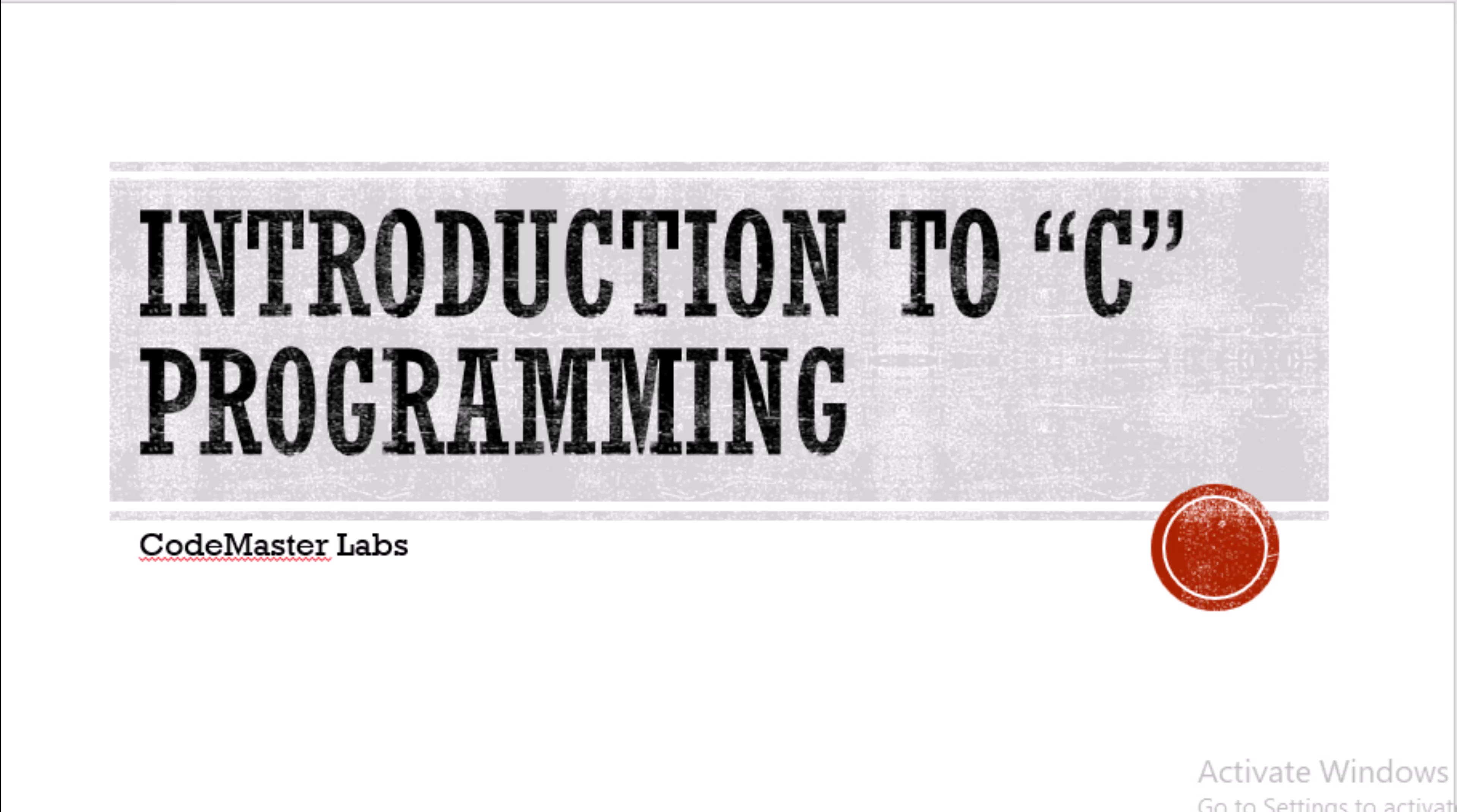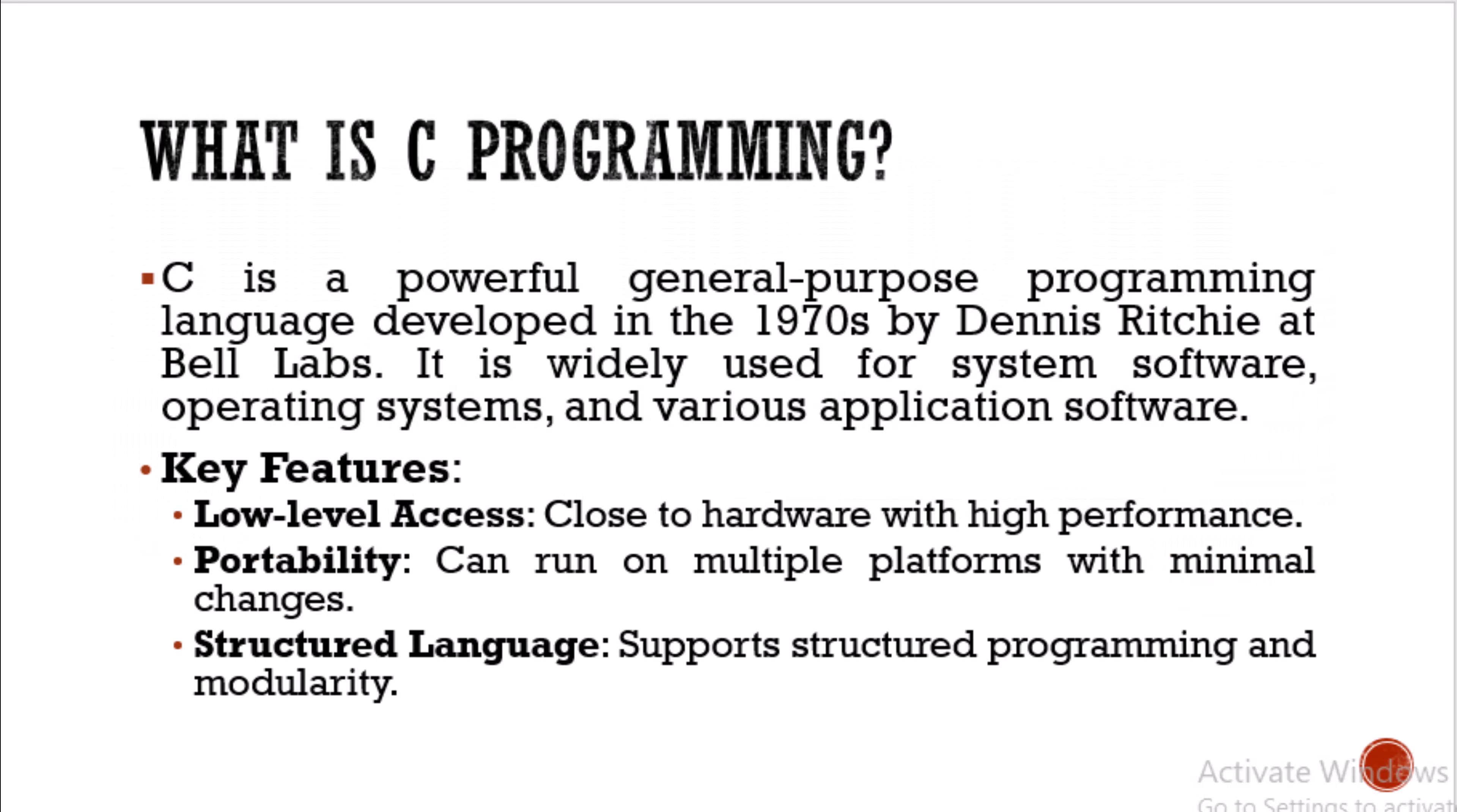C is a powerful tool developed in the 1970s for operating systems and various software applications. It's a low-level programming language for high performance because it directly accesses the hardware. If you have memory where you want to save some number, it directly writes code for that hardware.